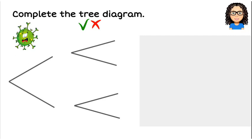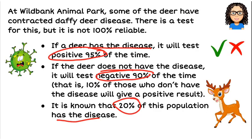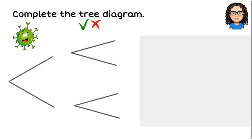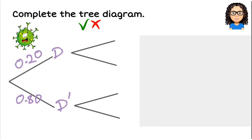So let's think about what information we've got. We were told that 20% of this population has the disease. So I want to say D for disease and D-dash for not disease. So 20% have the disease, that's 0.2, and that means 80% do not have the disease.